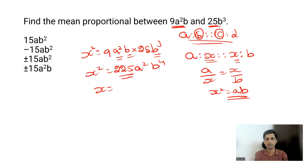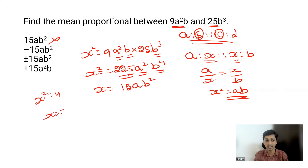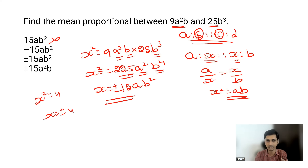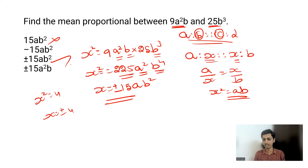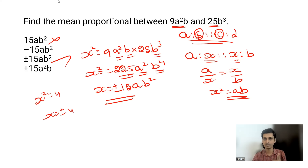Since x² = 225a²b⁴, the square root gives plus or minus 15ab². If you choose only 15ab² without the ± sign, your answer will be wrong — just like x²=4 gives x = ±2. So the answer is ±15ab². This concludes the cognitive ability section. Keep practicing, and the course link is in the description.